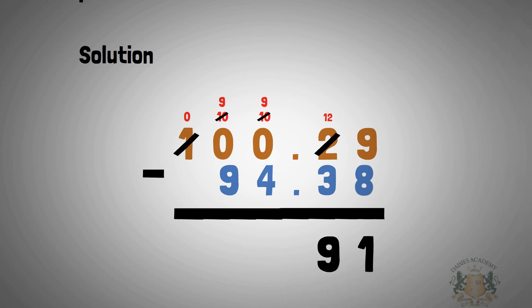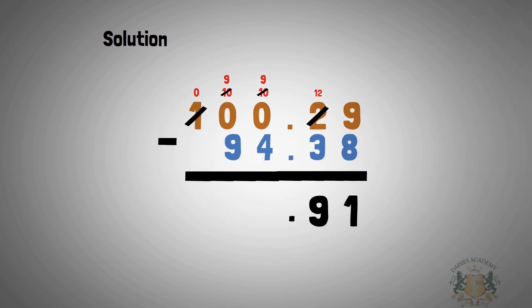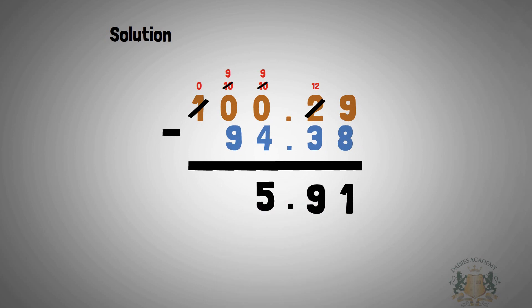So 12 minus 3 is 9. Before you move on, remember there's a decimal point — put your decimal point and move on. This is no longer 10; the 9 on top is what you use. So 9 minus 4 is 5. Here, 9 minus 9 is 0 — nothing. After that you also have 0 — nothing. So your answer is 5.91. Do this class exercise and have a wonderful day.